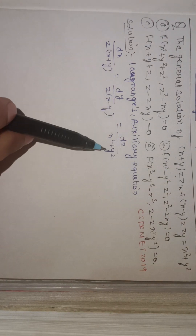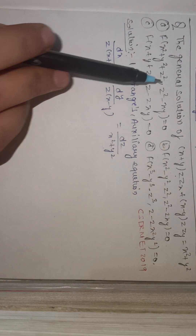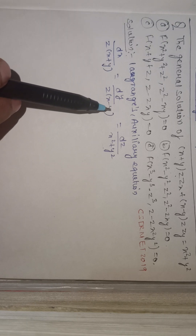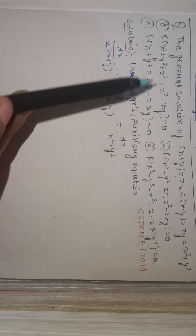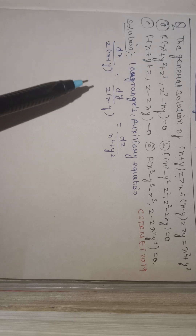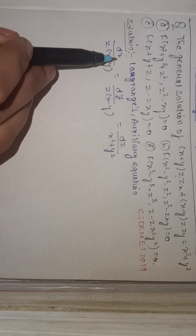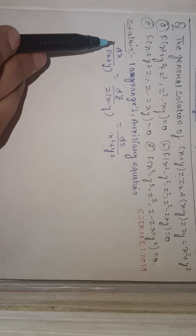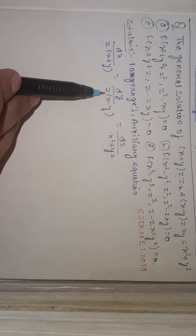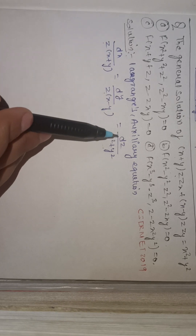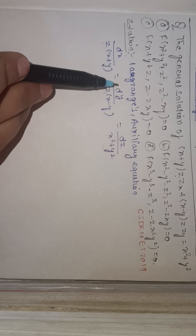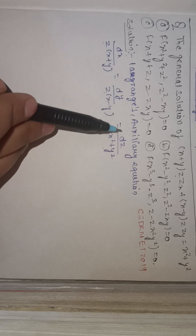This is the Lagrangian auxiliary equation of this partial differential equation. Now we will solve it. To find the solution, we multiply the first fraction by x in the numerator and denominator, the second by y, and the third by z in the numerator and denominator, and then subtract.